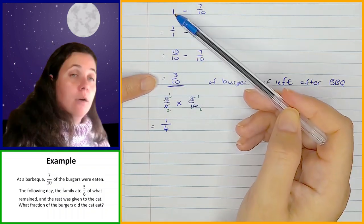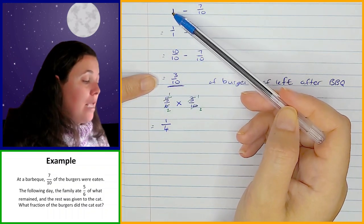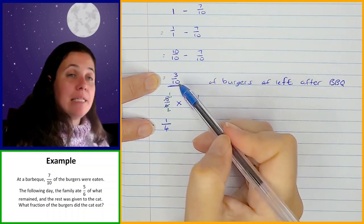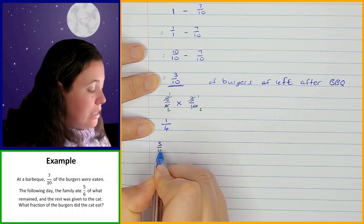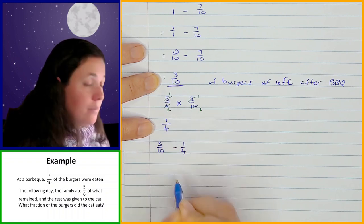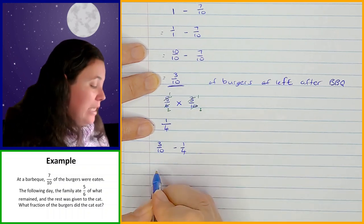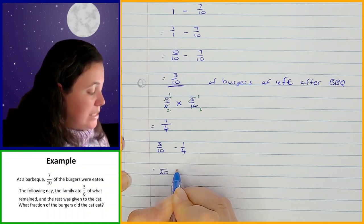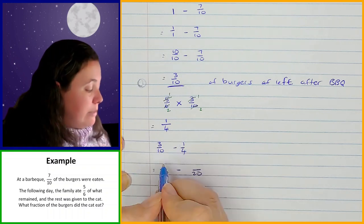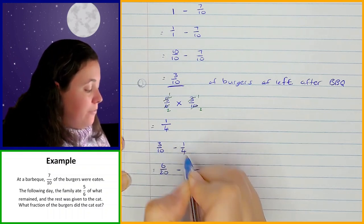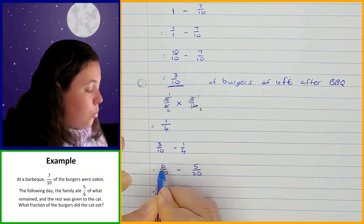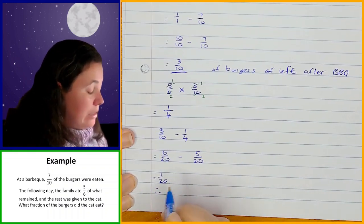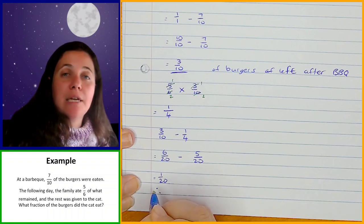We started with one (the total), then after the barbecue there was three tenths left, then the family ate a quarter. So it's three tenths minus one quarter. The LCD for 10 and 4 is 20: three tenths becomes 6 over 20, and one quarter becomes 5 over 20. So 6 over 20 minus 5 over 20 equals 1 over 20. The cat got to eat one twentieth of the burgers.